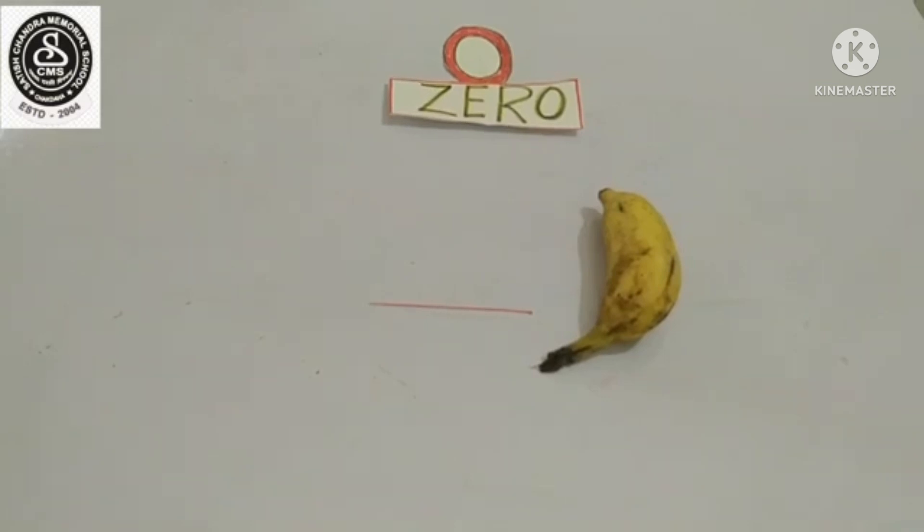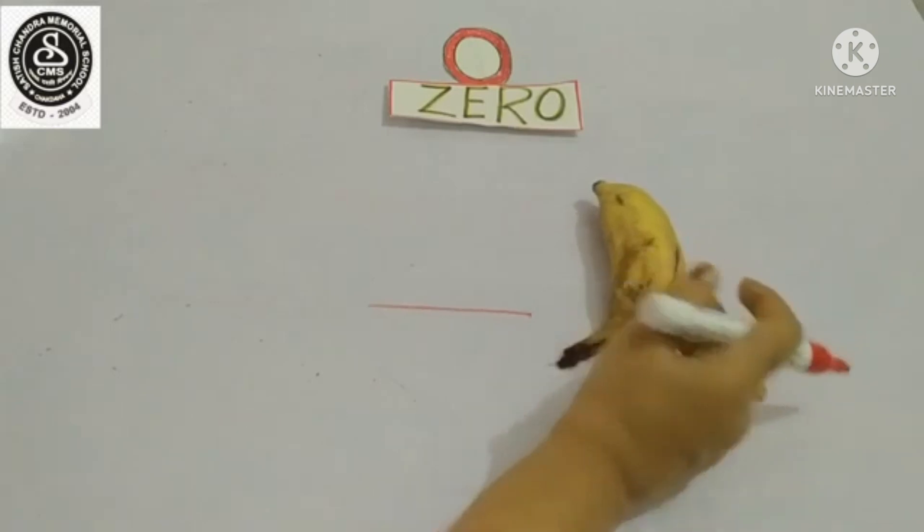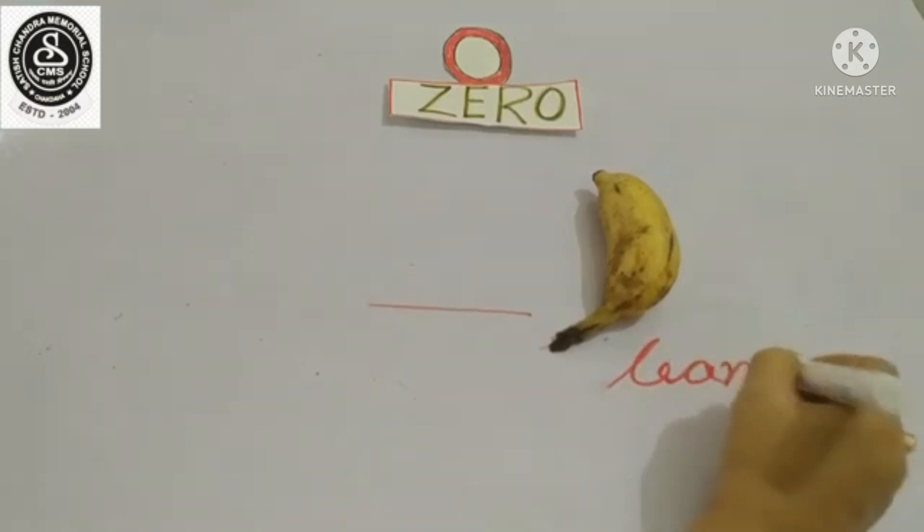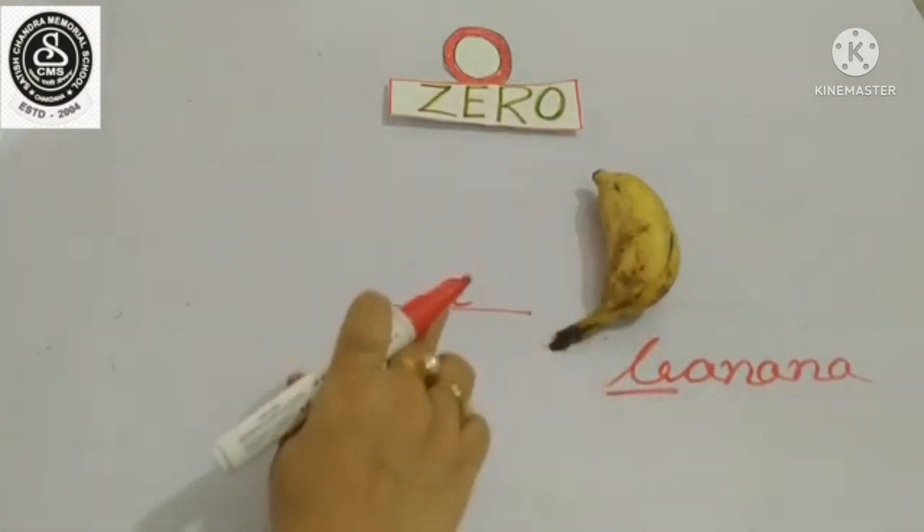Now, I am giving another example. Here you can see, one banana is there. So, how many banana? One. Only one. So, first, I am writing here the spelling of banana: B-A-N-A-N-A. So, what is the beginning letter of banana? B. So, B is a vowel or consonant? We know very well. How many vowels are there? Yes. A-E-I-O-U. Only five vowels are there. That means B is a consonant. So, before consonant, we should write A. A banana.